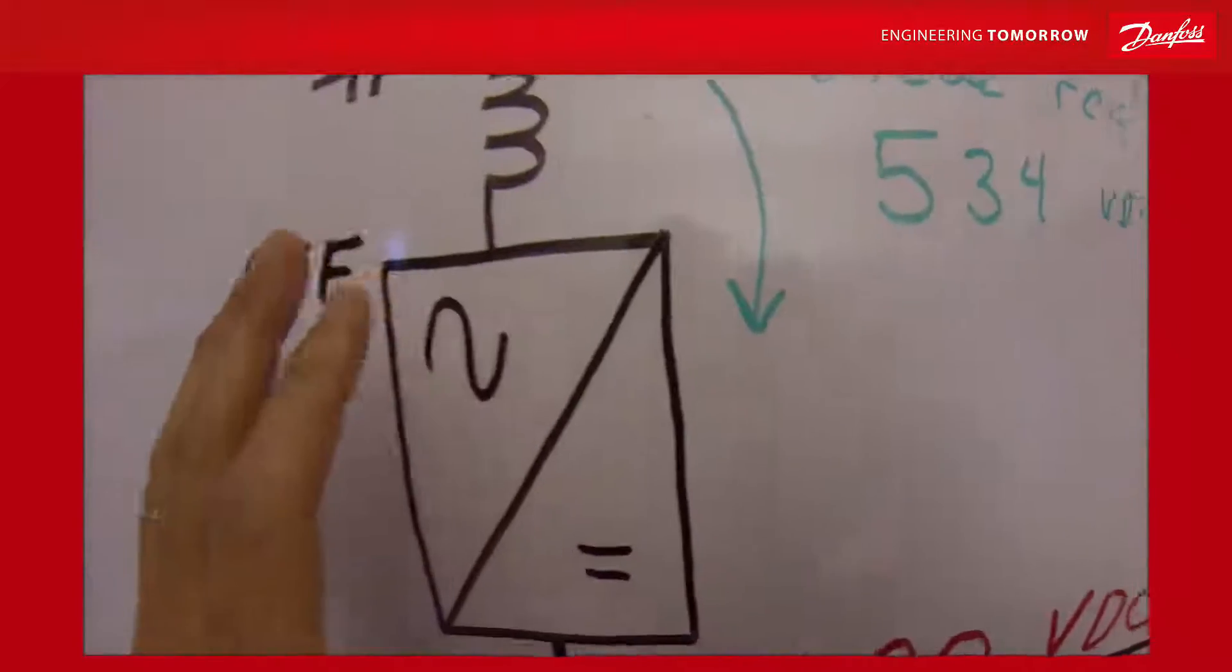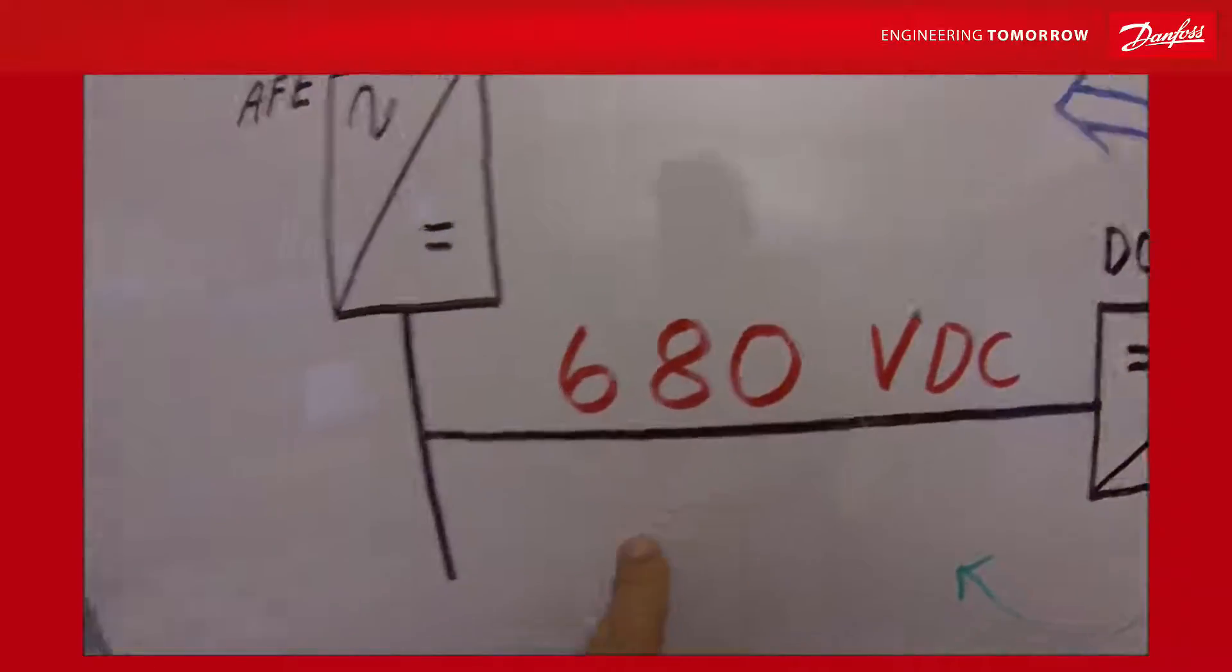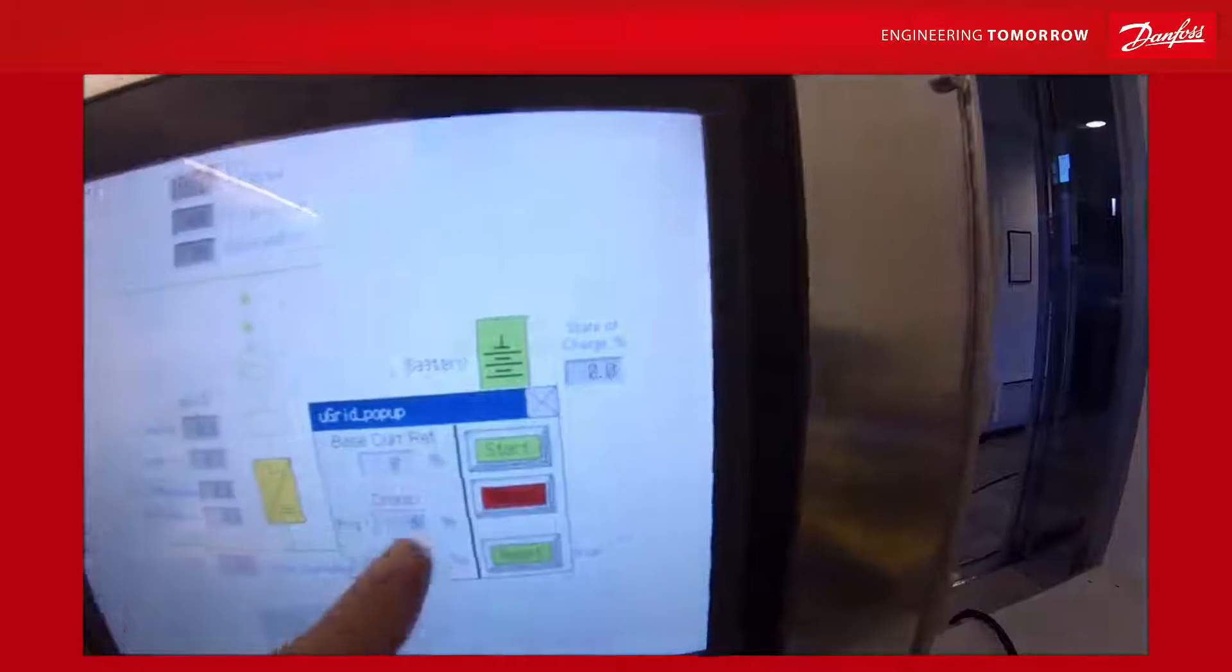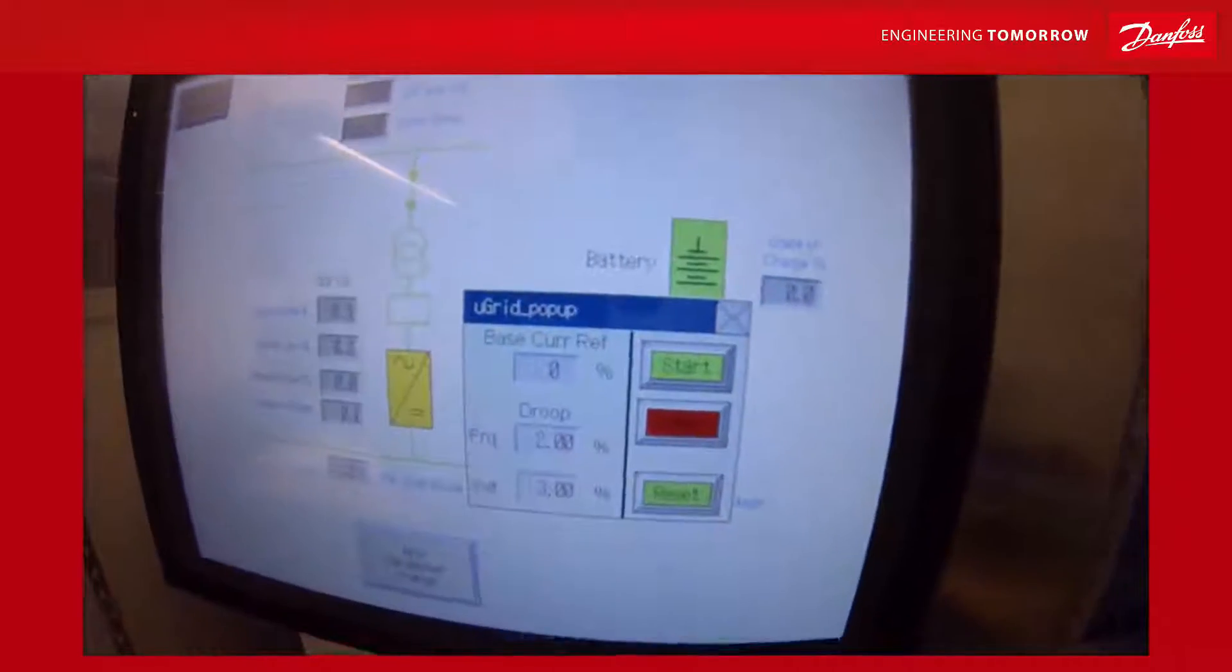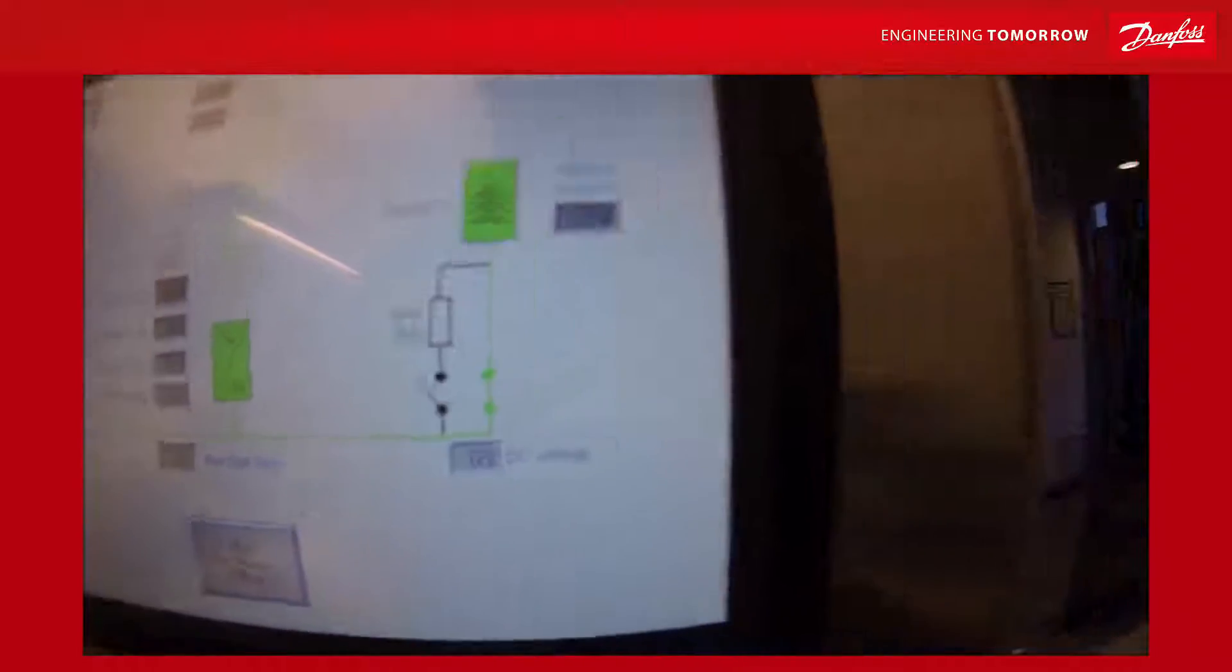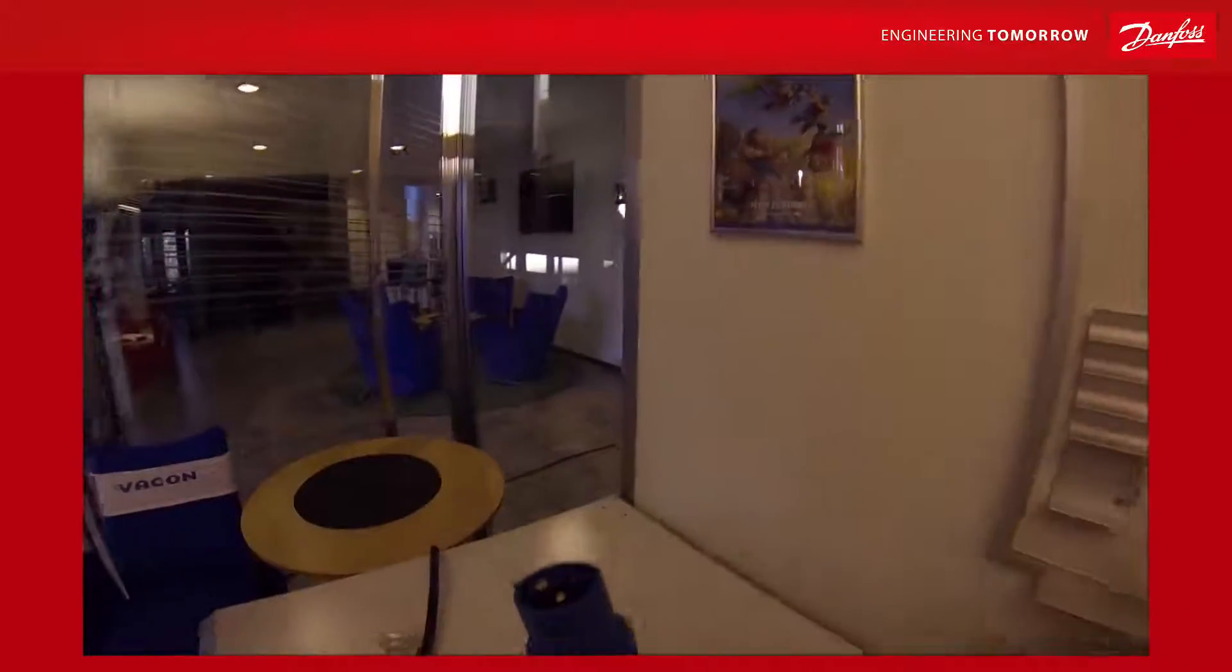When we start our active front end, the DC link will be boosted to 680 volts. So if we start it here, we will have 682 volts into this plug now.